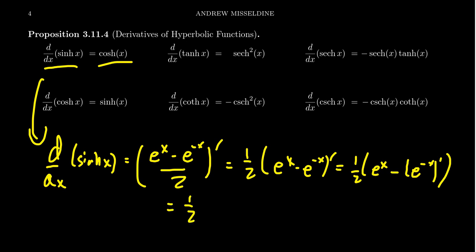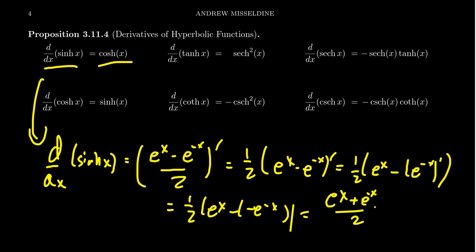So we get one half times (e^x minus negative e^{-x}). That double negative becomes a positive, so we end up with (e^x plus e^{-x}) over 2. That's just the same thing as cosh. So the derivative of sinh is equal to cosh.